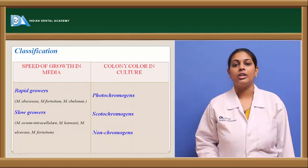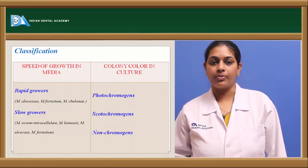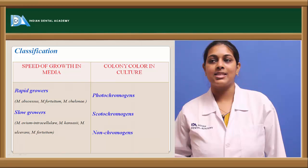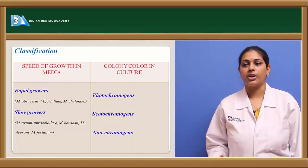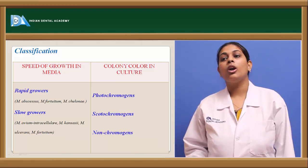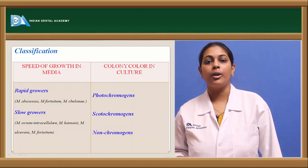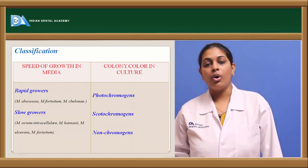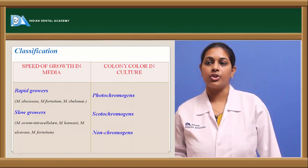Coming to colony color in culture: atypical mycobacterium produce certain pigments when cultured, and they are classified based on the colony color produced. Photochromogens are so called because these bacteria only produce yellow color pigments when grown in the presence of light.